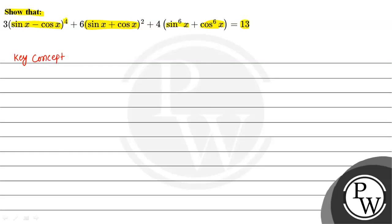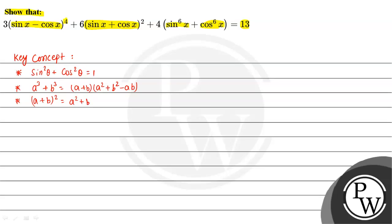The key concept to solve this question is we will use the trigonometric identity sin²x plus cos²x equals 1. We will also use the formula a³ plus b³ equals (a plus b)(a² plus b² minus ab), the formula (a plus b)² equals a² plus b² plus 2ab, and (a minus b)² equals a² plus b² minus 2ab.